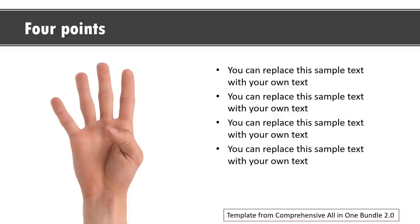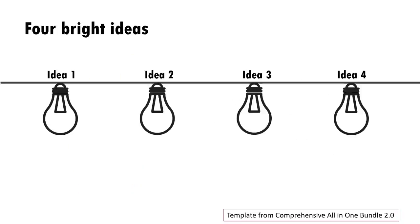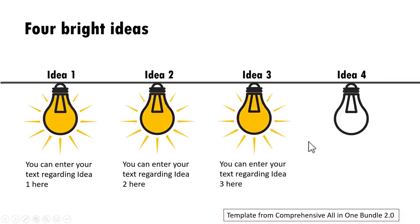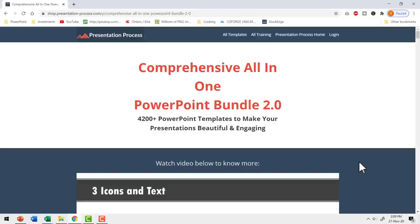If you want to communicate a concept like four ideas, you can show them all first — idea one, idea two, idea three, idea four — then on a click bring the audience's attention to each idea in turn. When you use purposeful custom animation the right way, it is impossible for your audience to take their eyes off your slides, and that makes your presentations successful.